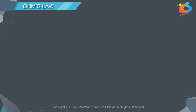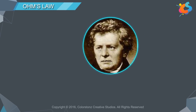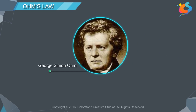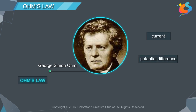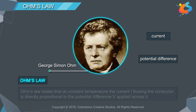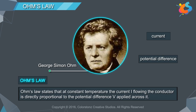Ohm's Law. A German physicist named George Simon Ohm derived a relation between current and potential difference based on some experimental observations. This relation came to be known as Ohm's Law. Ohm's Law states that at constant temperature, the current I flowing through the conductor is directly proportional to the potential difference V applied across it.